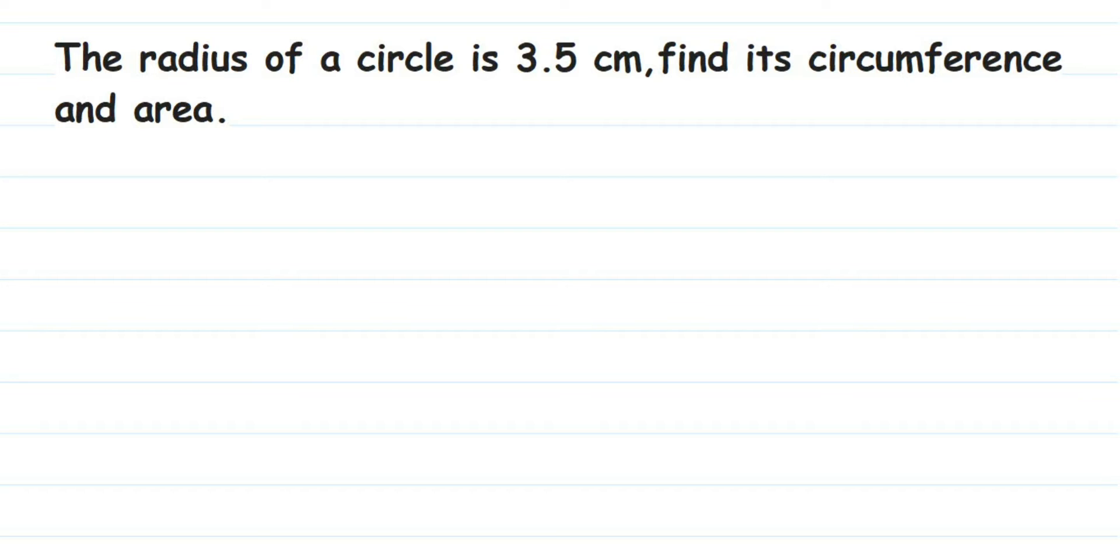Hey everyone, here's a question on circles. The question is: the radius of a circle is 3.5 centimeters, find its circumference and area. They have given the radius as 3.5 centimeters. We have to find out both circumference and the area, so we're going to use the formulas for circumference of circle and area of circle.